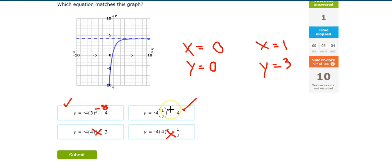Let's plug in a 1 here. 1 third to the 1st power is 1 third times negative 4 is negative 4 thirds.